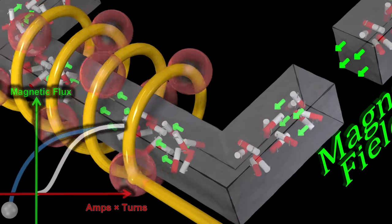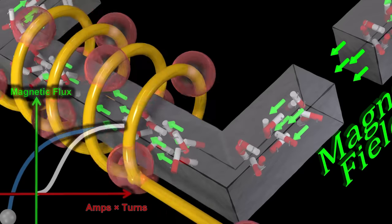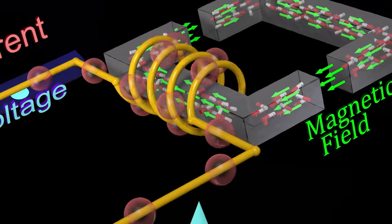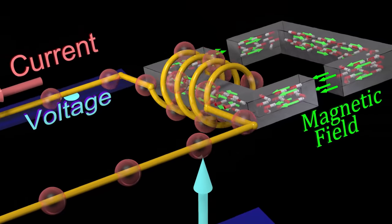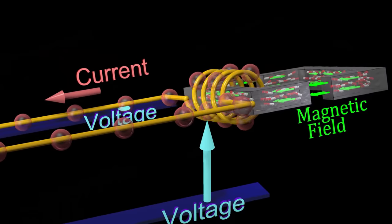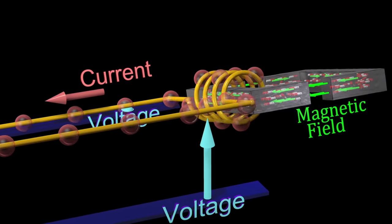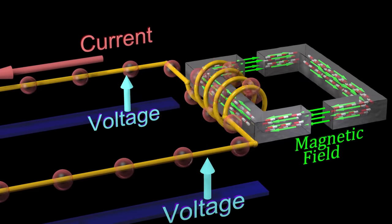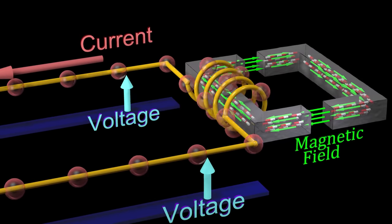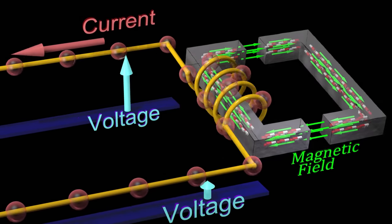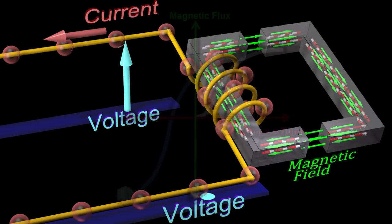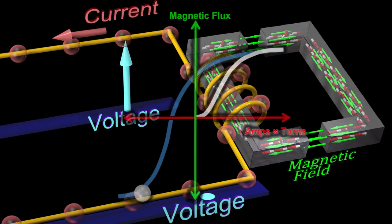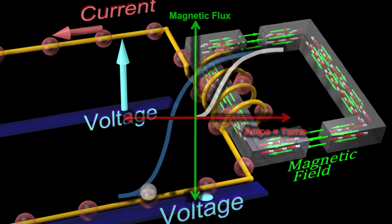We are now magnetizing the material in the opposite direction. Eventually, all these magnets will be aligned in the opposite of the previous direction. If we reverse the direction of the voltage again, we will again reduce the percentage of magnets aligned in the same direction.